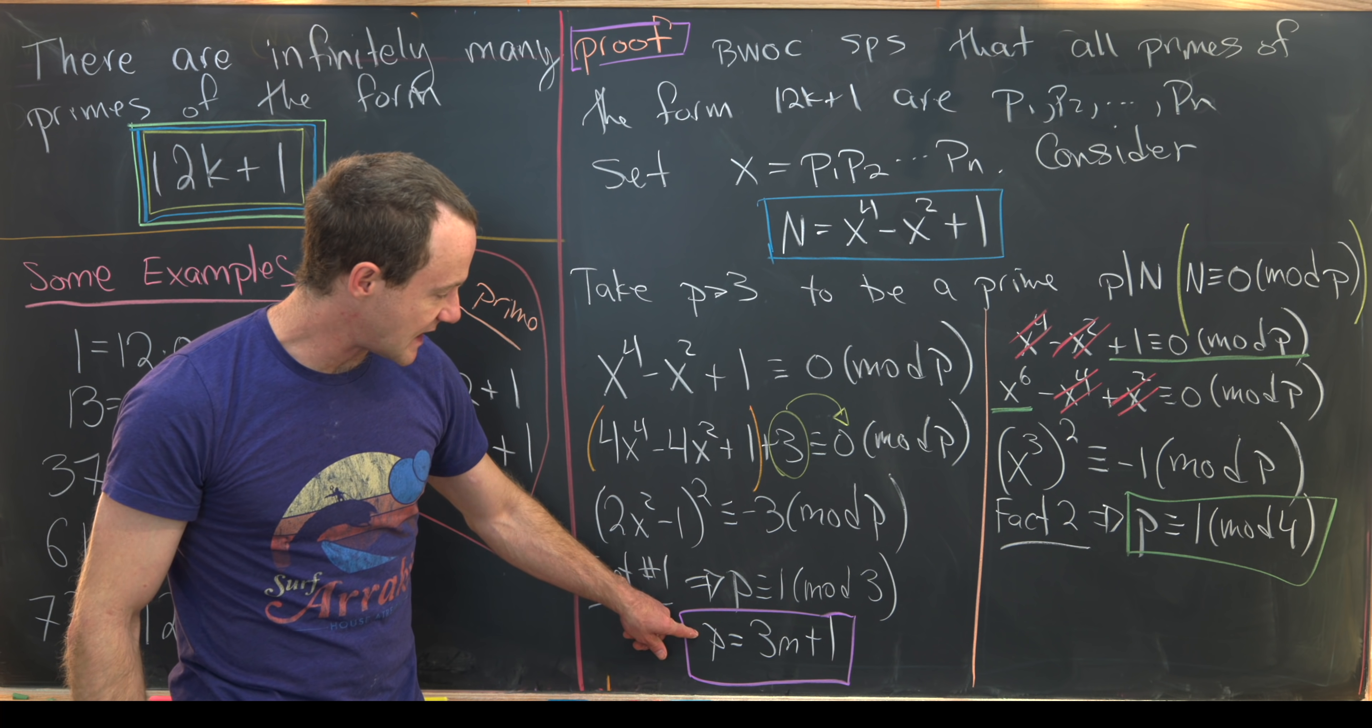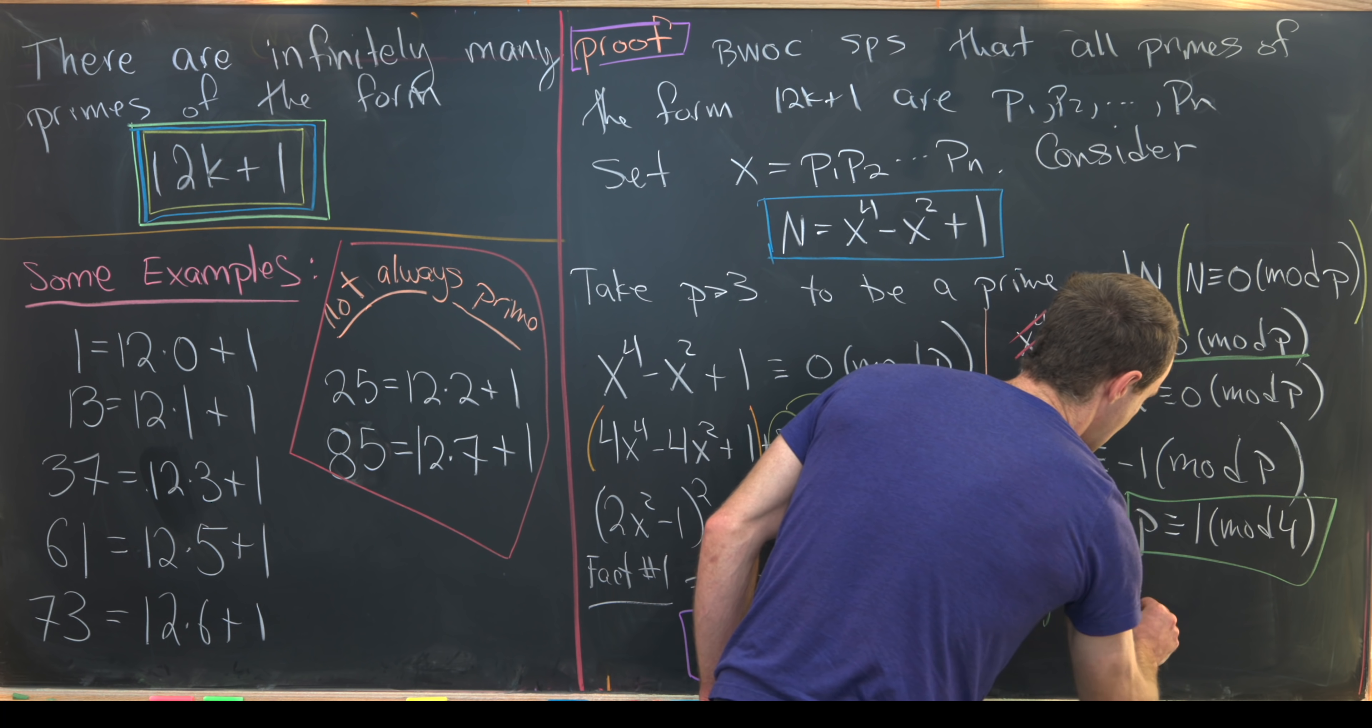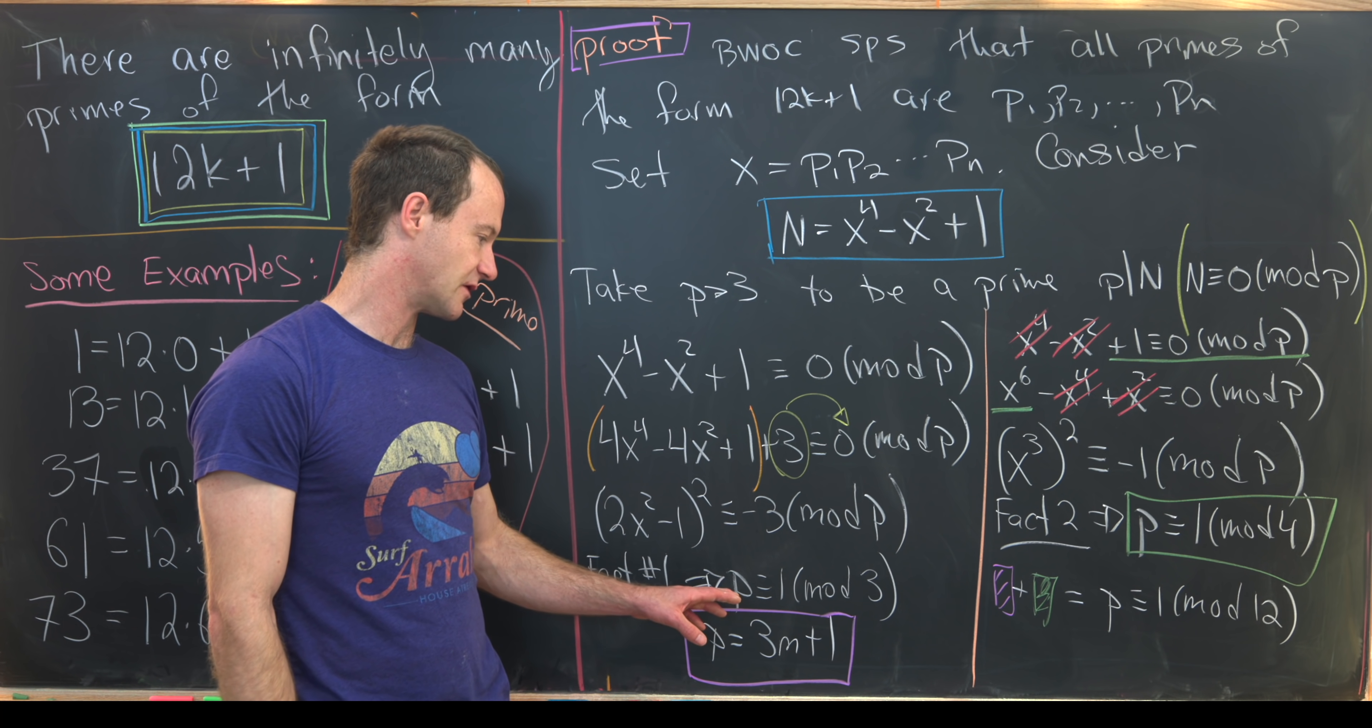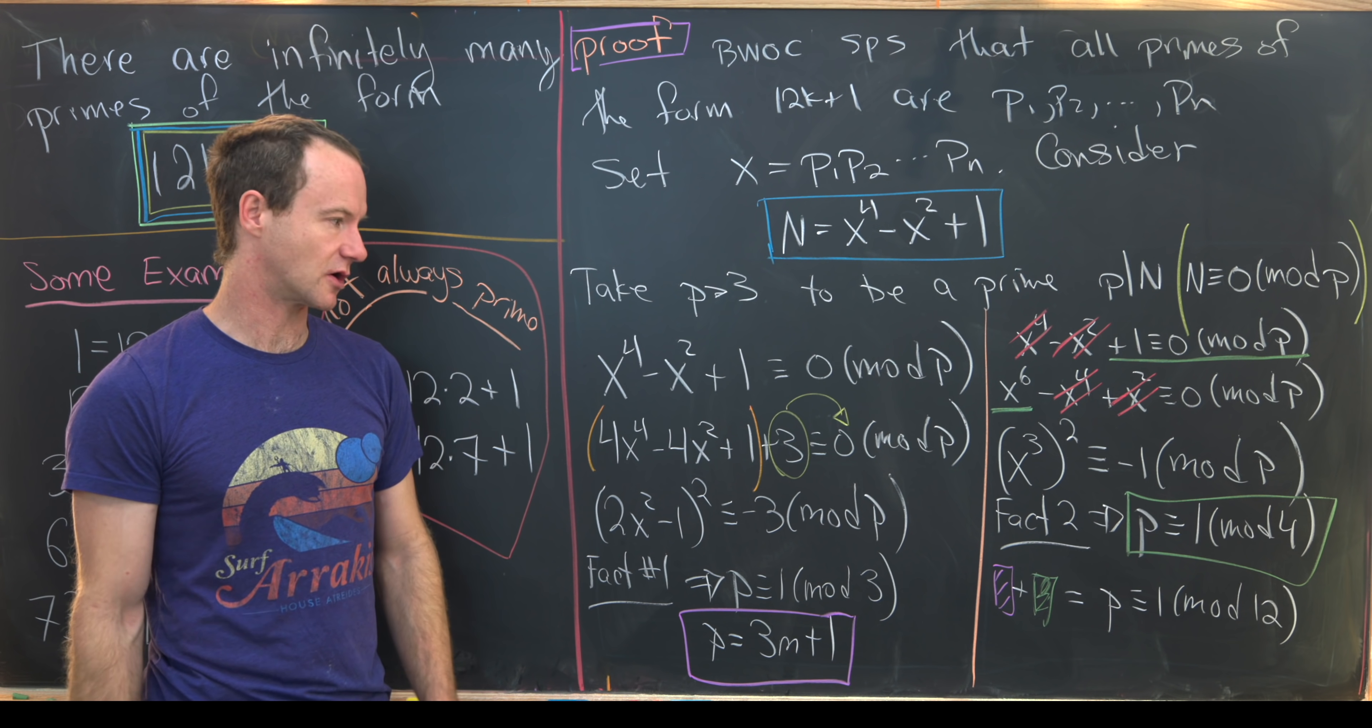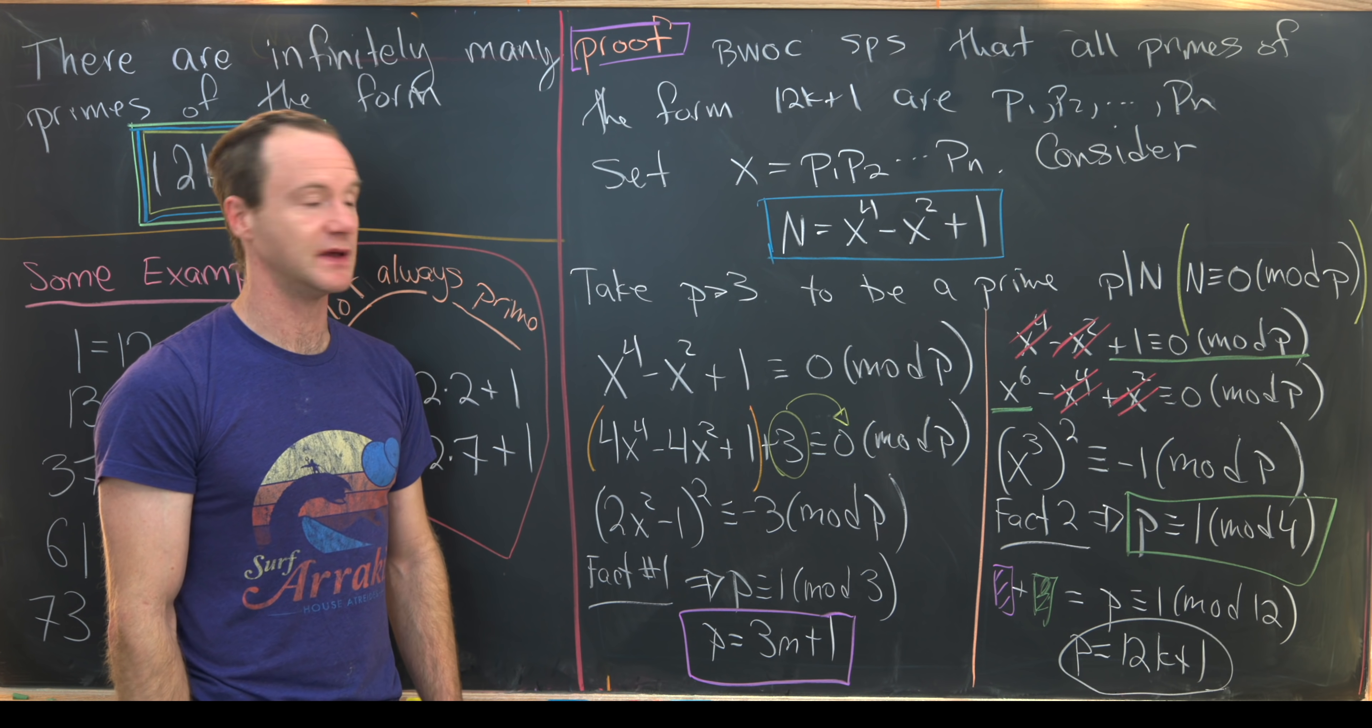But now the fact that we have p is congruent to 1 mod 3 and 1 mod 4. So in other words, purple box plus green box means that p is congruent to 1 mod 12. So having a remainder of 1 when dividing by 4 and simultaneously having a remainder of 1 when dividing by 3 means that you have a remainder of 1 when dividing by 12. That's the kind of thing you do at the beginning of learning modular arithmetic. But that means that p is of the form 12k plus 1. Again, that's an equivalent definition of being congruent to 1 mod p.